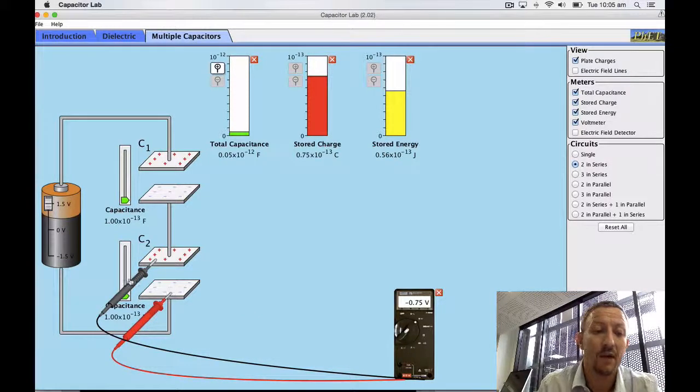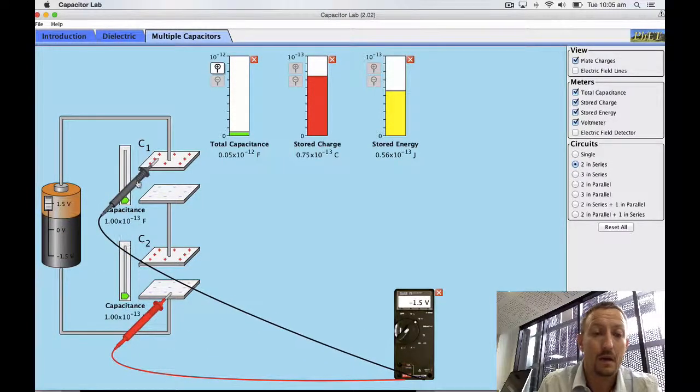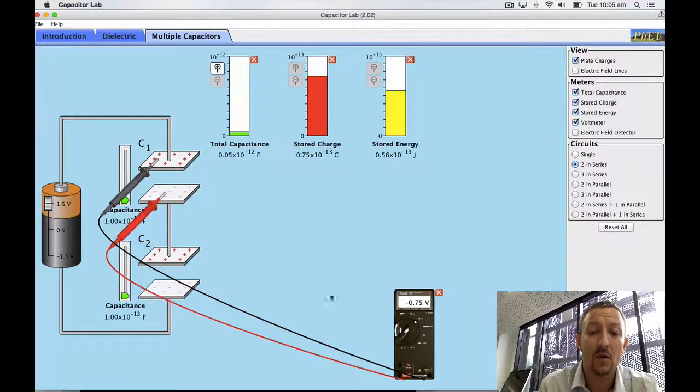So we've got 0.75 on C2, 1.5 across C1 and C2, and 0.75 across C1. So it stands to reason that when we have two components in series they are going to share the amount of voltage which is occurring in the actual circuit.